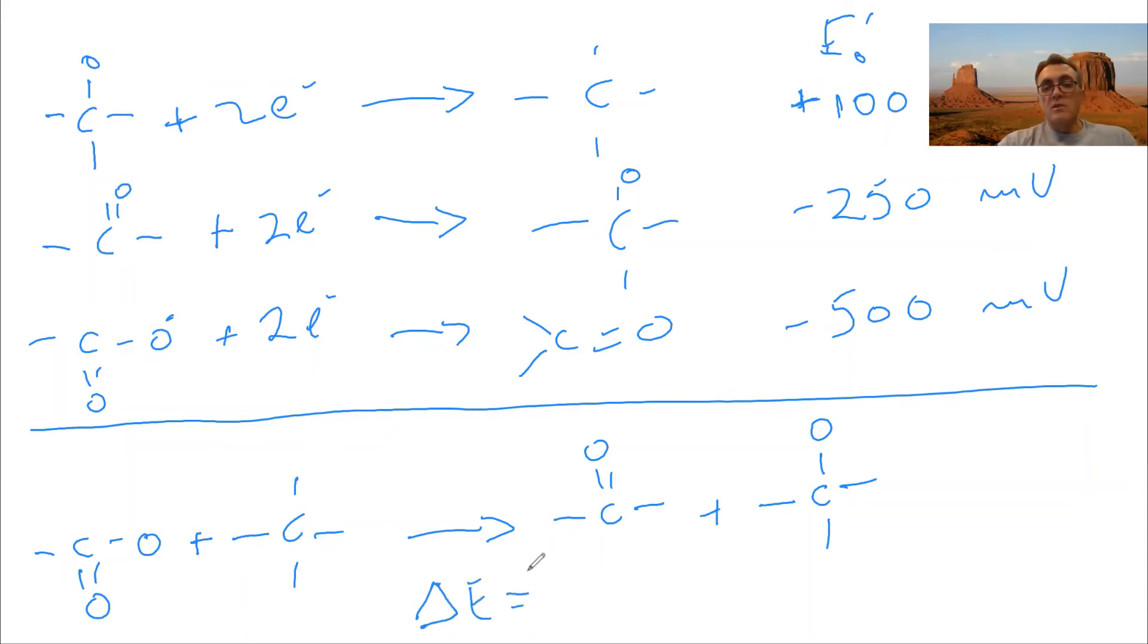To get that, we'll subtract the value of whatever gets reduced. So this was the third reaction here. So that will be minus 500. And from here, we're going to subtract the value of whatever got oxidized. So that will be the very first one. So write plus 100. I want you to notice a couple of things here. You subtract whatever it is and you stick whatever gets oxidized, its actual value without reversing it, even though the reaction itself, of course, is reversed from what it is written as a half cell.